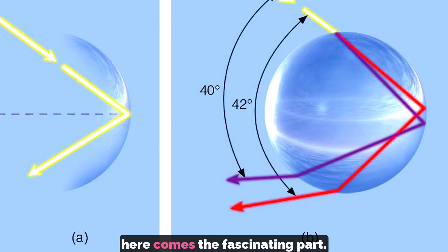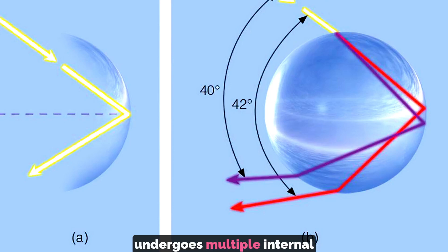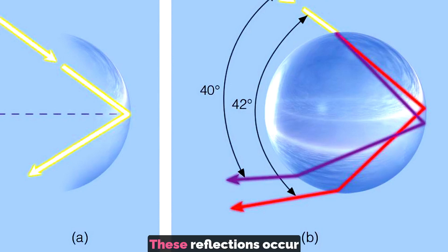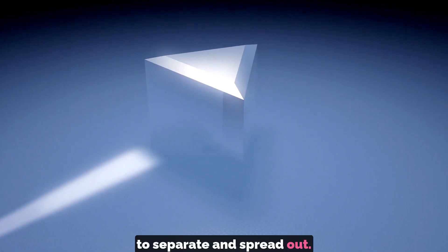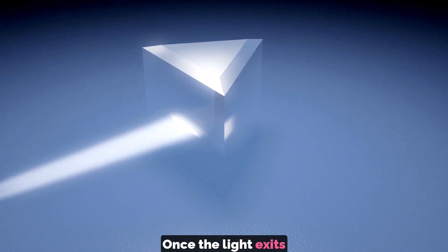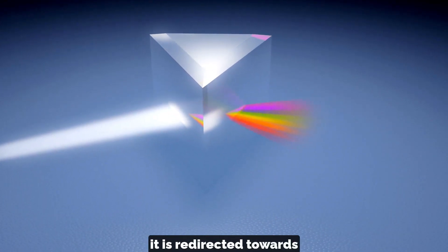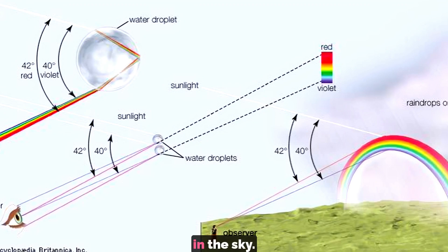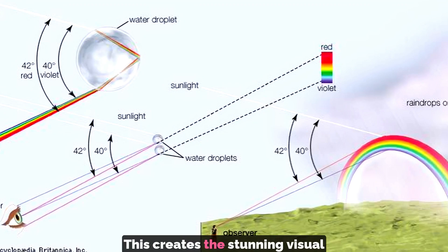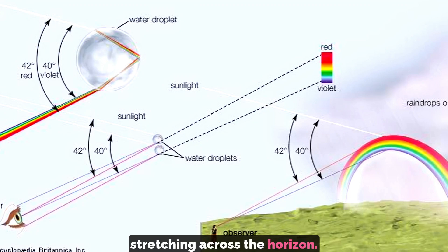Here comes the fascinating part. After refraction, the light inside the droplet undergoes multiple internal reflections off the droplet's inner surface. These reflections occur at varying angles, causing the different colors to separate and spread out. Once the light exits the droplet, it is redirected towards our eyes. Since each color bends at a slightly different angle, the rays of light reach our eyes at different positions in the sky, creating the stunning visual effect of the rainbow, with its distinct bands of color stretching across the horizon.